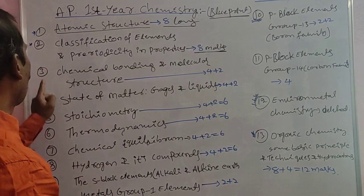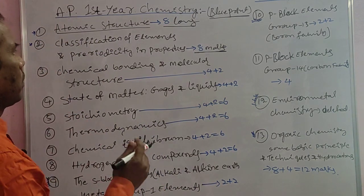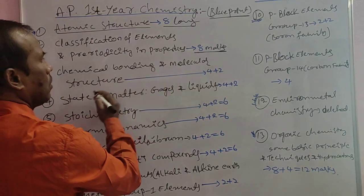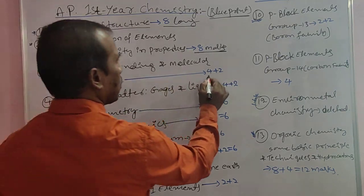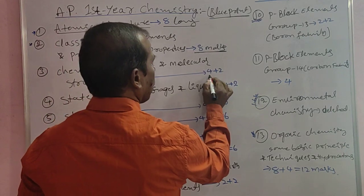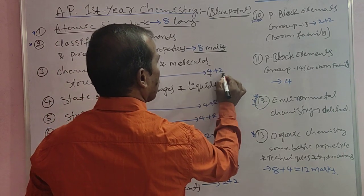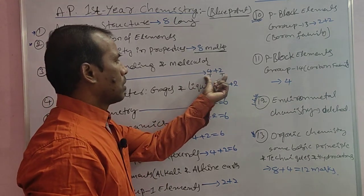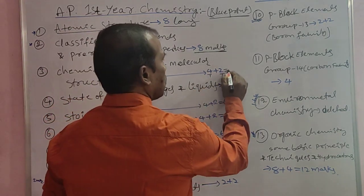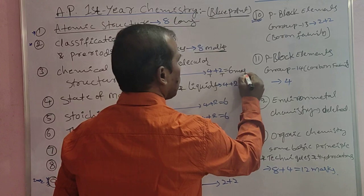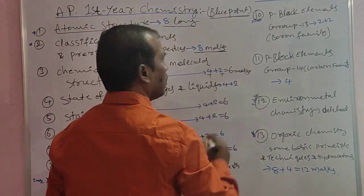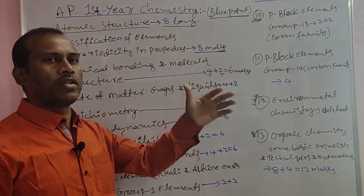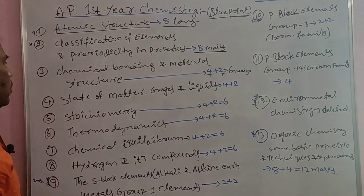The third topic is Chemical Bonding and Molecular Structure. The weightage marks for this topic are 6 marks. This topic has one short answer and one very short answer. So the total marks for Chemical Bonding and Molecular Structure is 6 marks, covered by one short answer and one very short answer.